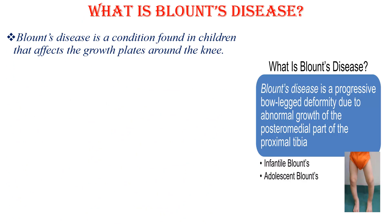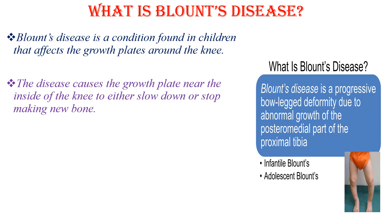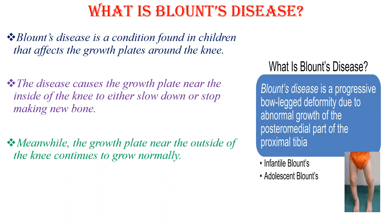Blount's disease is a progressive bow leg deformity due to abnormal growth of the posterior medial part of the proximal tibia. It is a condition found in children that affects the growth plates around the knee. The disease causes the growth plate near the inside of the knee to either slow down or stop making new bone, while the growth plate near the outside of the knee continues to grow normally. This results in a bow leg appearance in one or both legs.